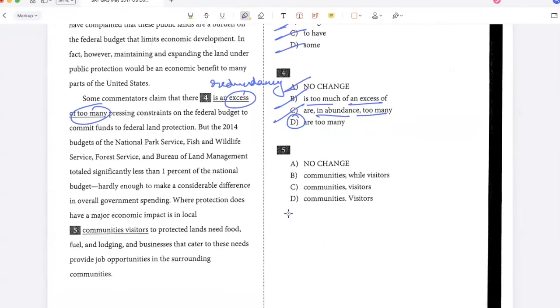But the 2014 budgets of the National Park Service, Fish and Wildlife Service, Forest Service, and Bureau of Land Management total significantly less than 1% of the national budget, hardly enough to make a considerable difference in overall government spending. Where protection does have a major impact is in local communities. Visitors to protected lands need food, fuel and lodging and businesses that cater to these needs provide job opportunities in the surrounding communities. Here I have to choose the correct punctuation and I'm saying where protection does have a major economic impact is in local communities, that's one sentence. And visitors to protected lands need food, fuel and lodging, that's a second sentence. So I have two independent sentences. So I should place a period between them. So option D is the best answer.